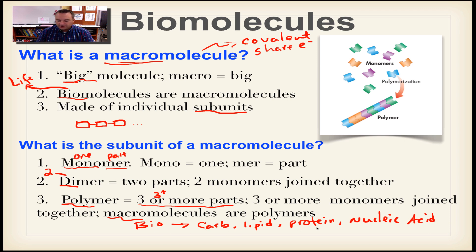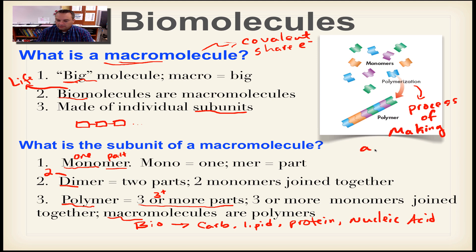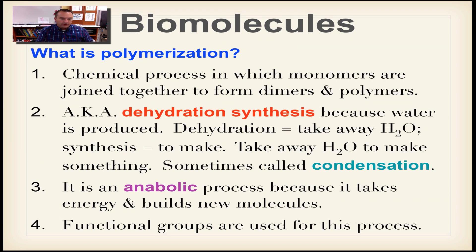We have monomers — single little parts — and they're going to go through a process called polymerization. Polymerization is simply the process of making a polymer. We're going to go over that in more detail on the next slide.